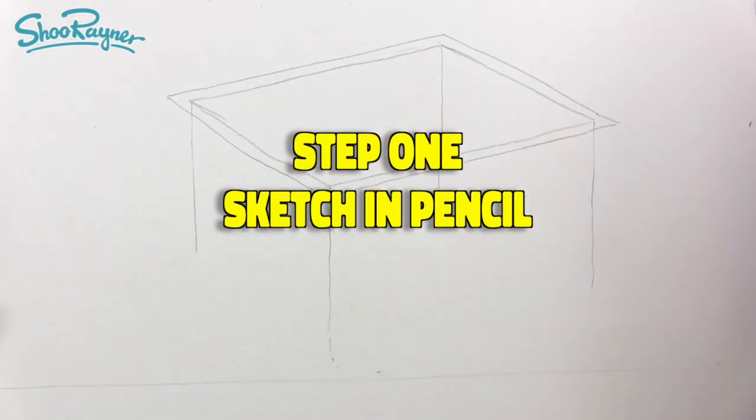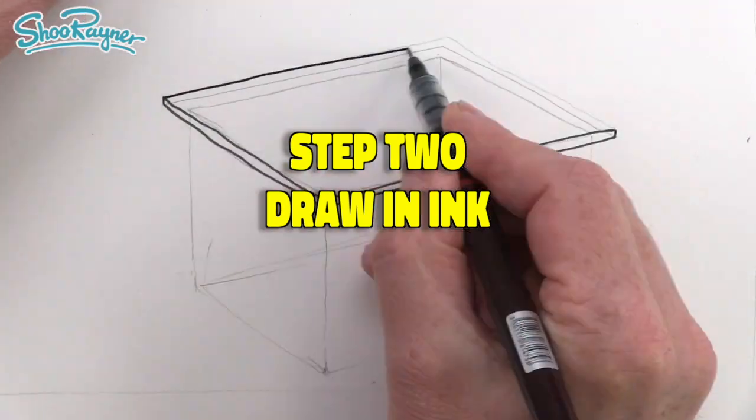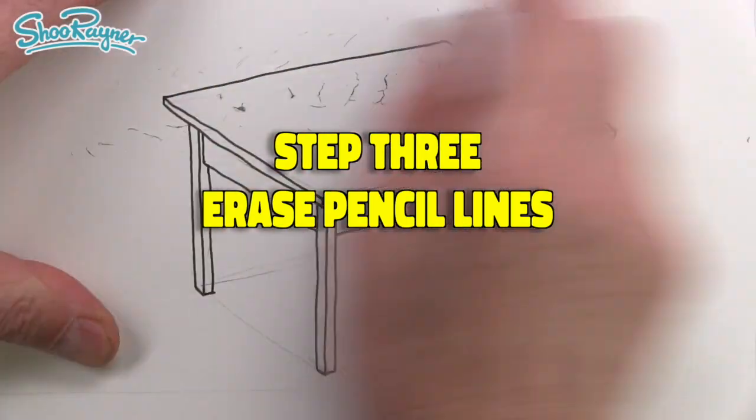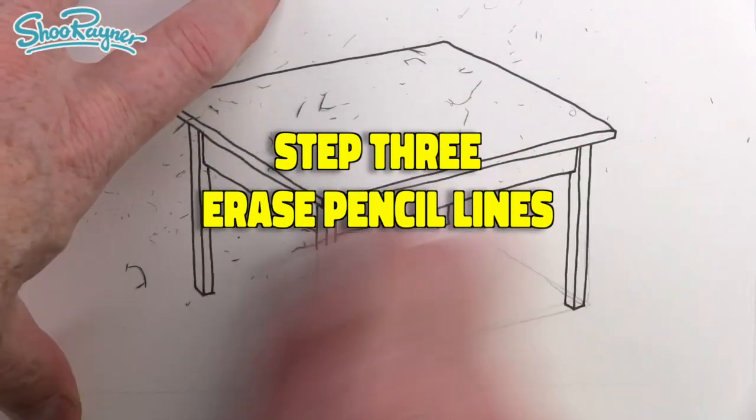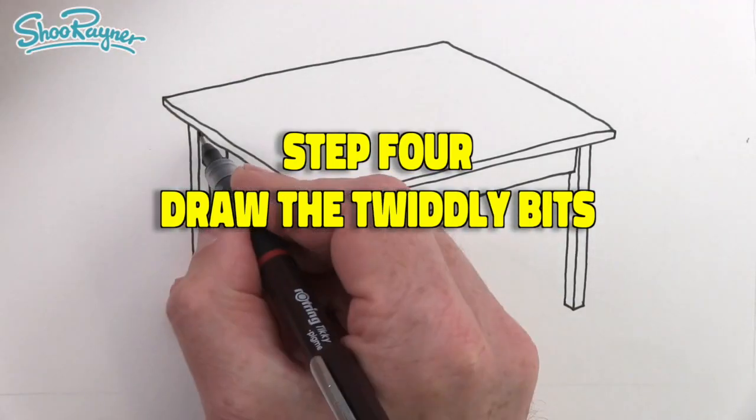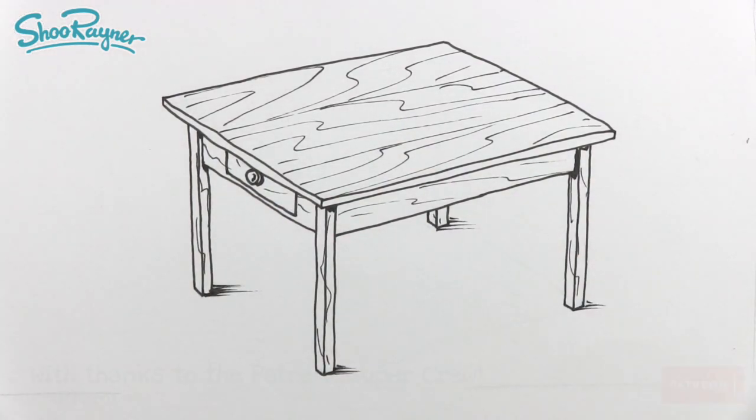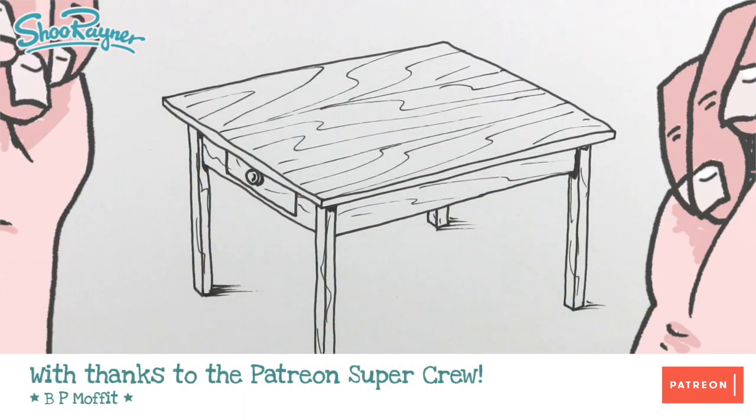In step one I'm going to show you how to plan it out in pencil. In step two we'll draw in the outlines in ink. Step three we'll erase all those pencil lines so no one will know how clever you were drawing it. And in step four I'll show you how to do all the twiddly bits which will make it look much more interesting. But let's not talk about it, let's do it.